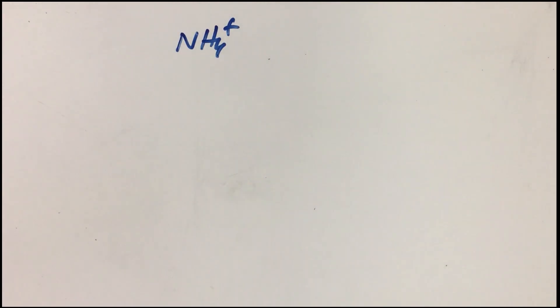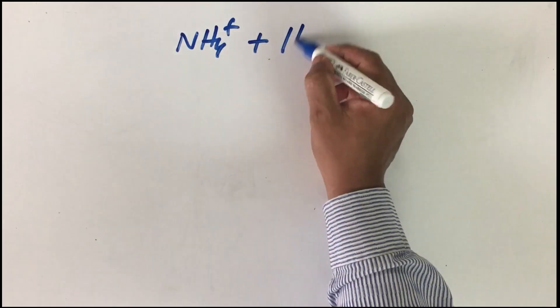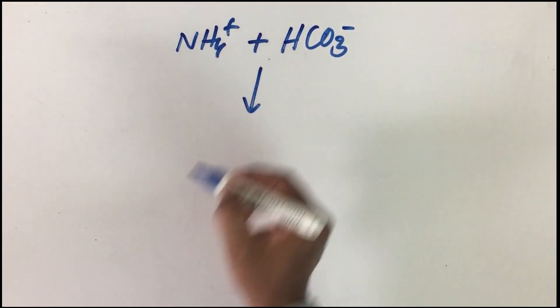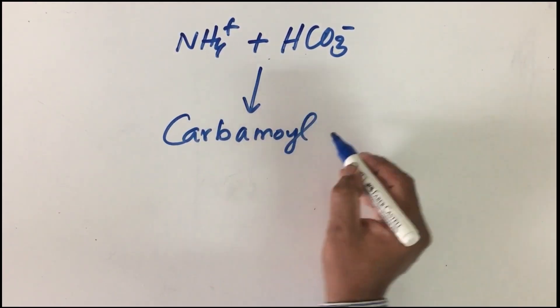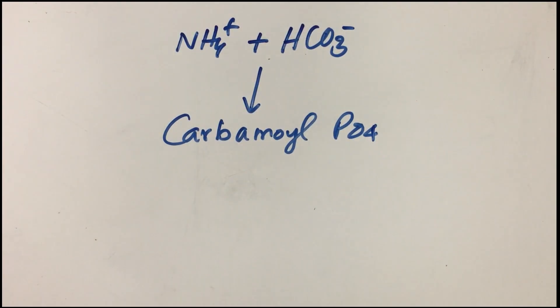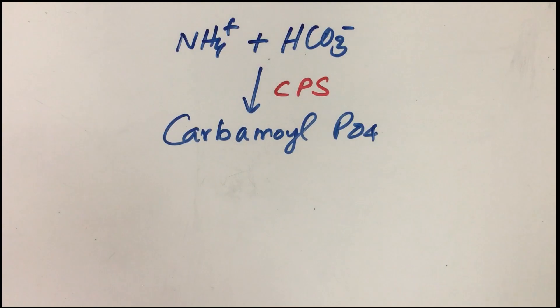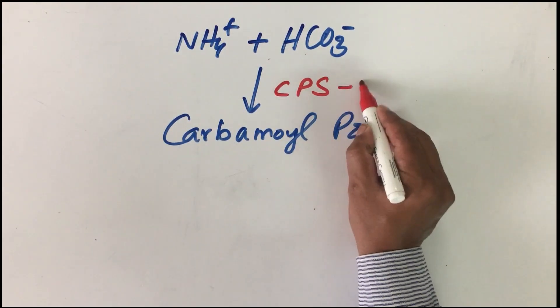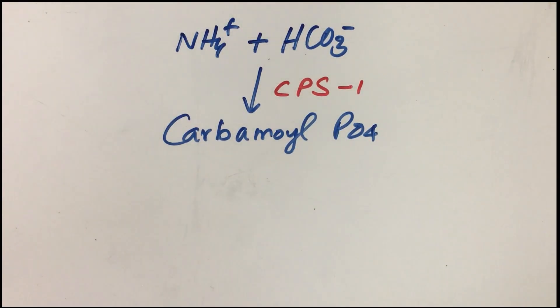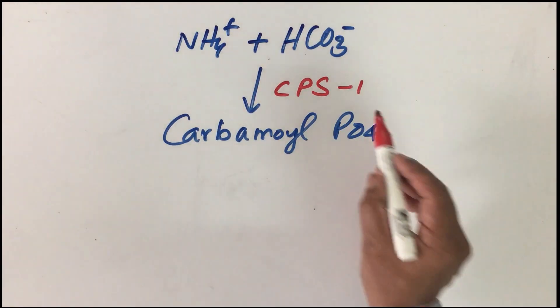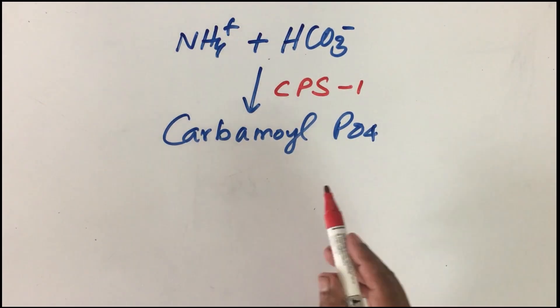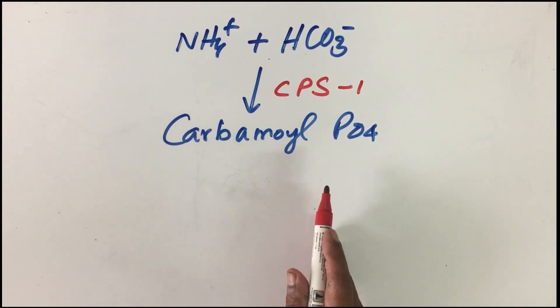The urea cycle begins in the mitochondrial matrix, where ammonia is available. The first reaction combines ammonia with bicarbonate ion to produce carbamoyl phosphate. This is catalyzed by carbamoyl phosphate synthetase, present in the mitochondrial matrix. It is an isoenzyme: type 1 is responsible for the urea cycle, while type 2 is responsible for pyrimidine metabolism and nucleic acid synthesis.